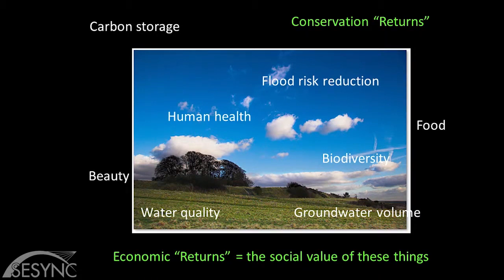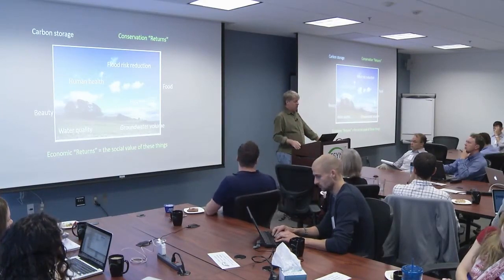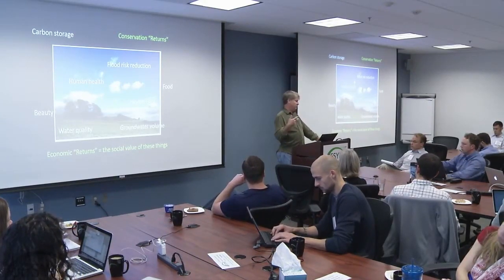The topic is conservation return on investment. When we conserve or manage natural resources, we can think of that as delivering a set of returns — this is a partial list of what we mean by returns, which you can think of as the biophysical objectives of what we're doing. We're trying to enhance biodiversity, generate food, generate better health outcomes, provide beauty, those kinds of things. You can think of those as the conservation returns we get from conservation, protection, or management.